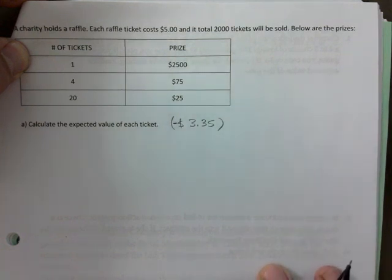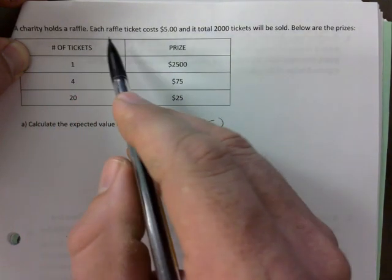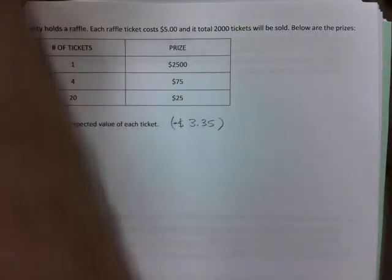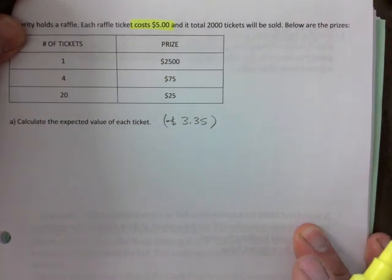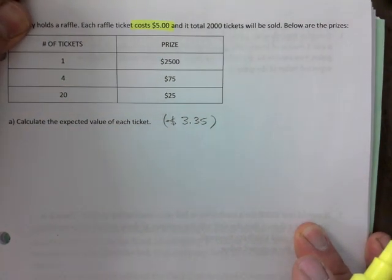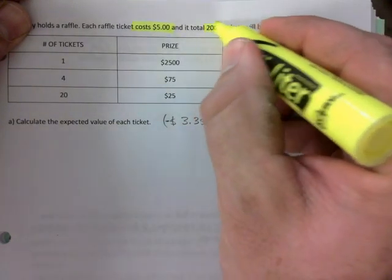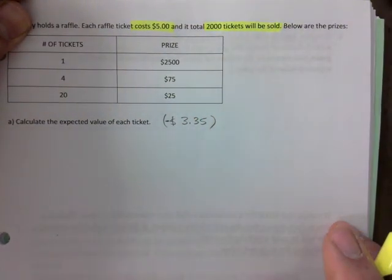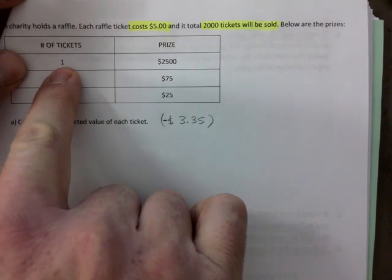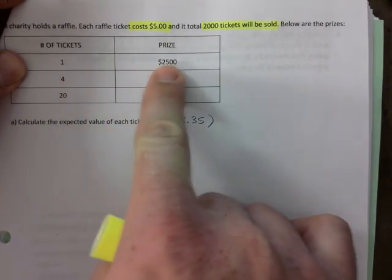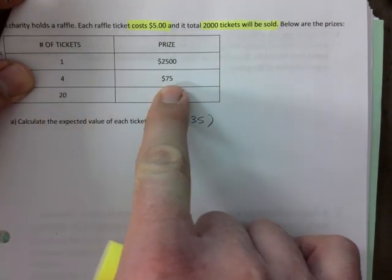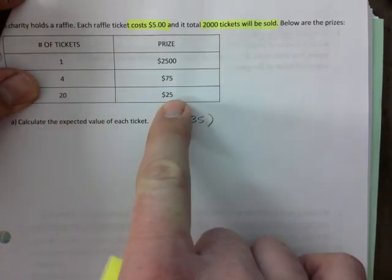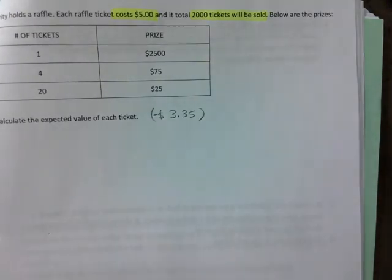A charity holds a raffle. Each raffle ticket costs five dollars - that's very important because we're going to need to have a cost in our expected value. There are 2000 tickets sold and below are the prizes. One ticket wins $2500, four tickets win $75, twenty tickets win $25.